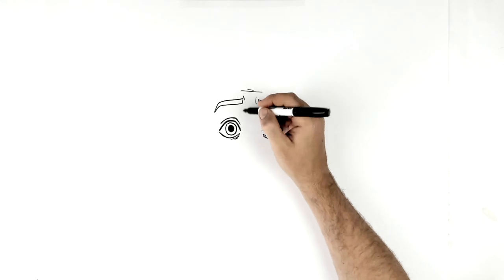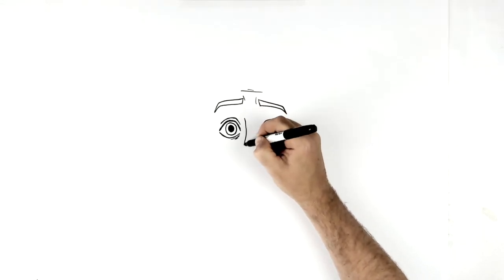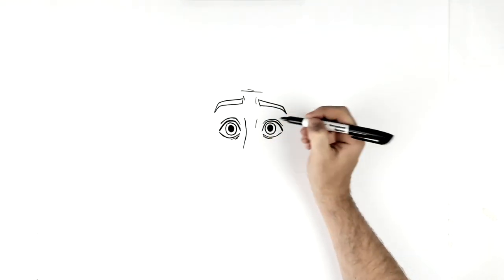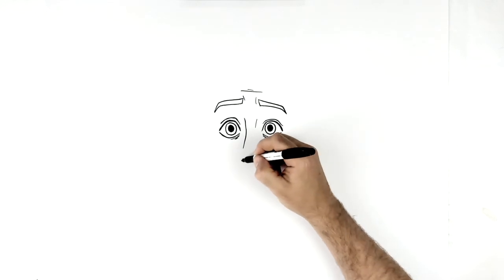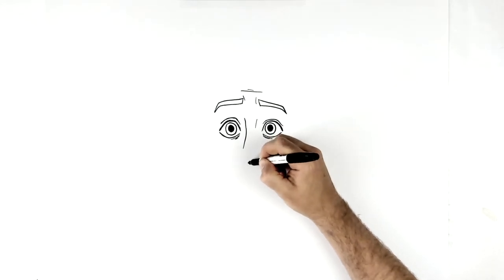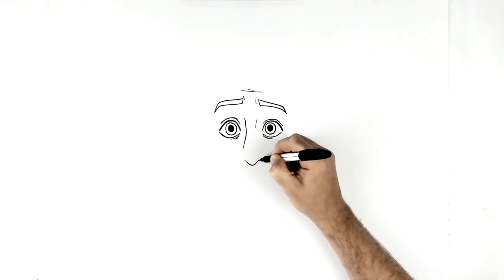Then for his nose, we just have a line coming down from here, out maybe like a little one there as well. Then we go down and do his nostrils. The middle of them just curves around here, then around like so.